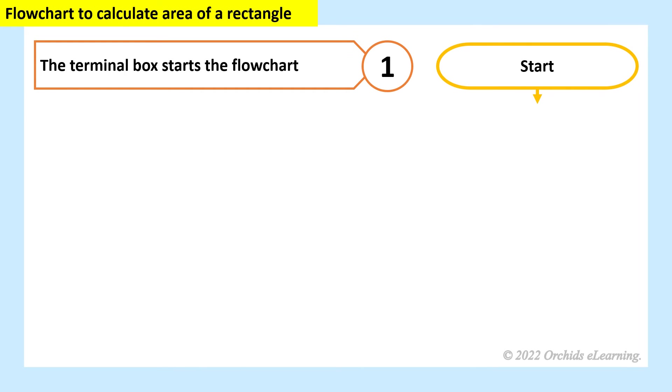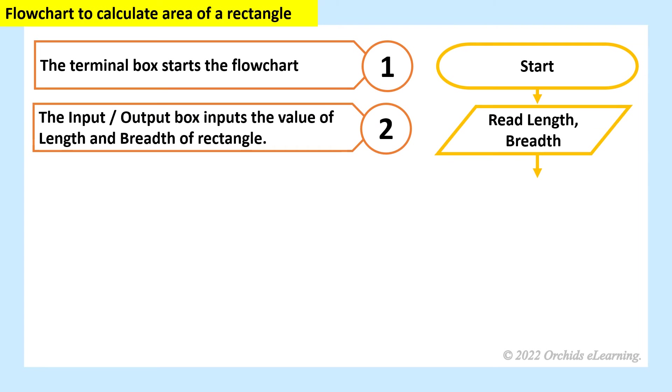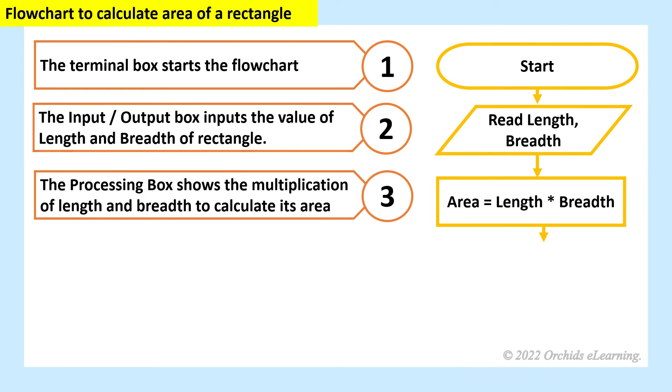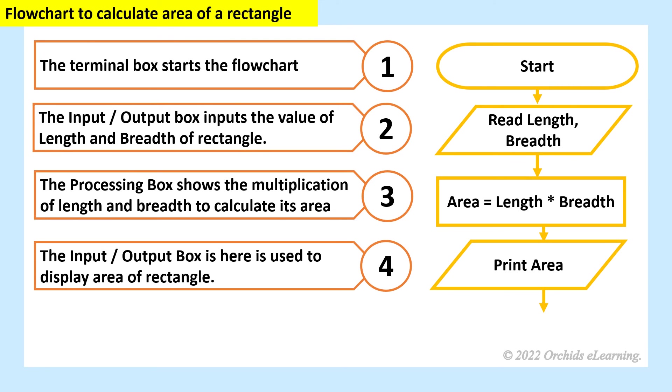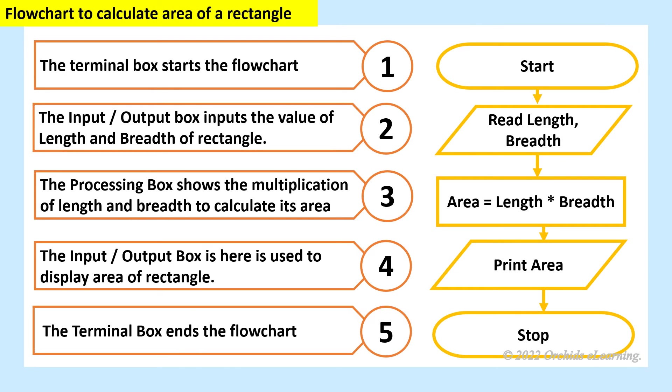Flow chart to calculate area of a rectangle. The terminal box starts the flow chart. The input output box inputs the value of length and breadth of rectangle. The processing box shows the multiplication of length and breadth to calculate its area. The input output box is here used to display area of rectangle. The terminal box ends the flow chart.